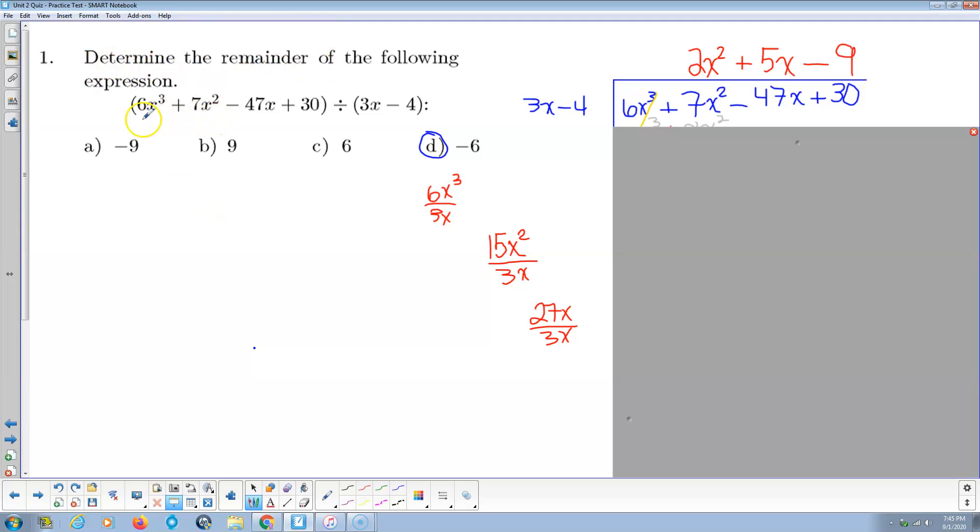Okay, determine the remainder of the following expression. We get this third degree polynomial divided by a linear polynomial. But because this is not in the form of x minus r, it's got the coefficient of 3, synthetic division is not really a smart move. So we're going to do long division. So we take our 6x³ divided by 3x to the fourth. First term divided by first term, that's here. x³ divided by x is an x², and then 6 divided by 3 is 2. So there's the first term of our quotient.